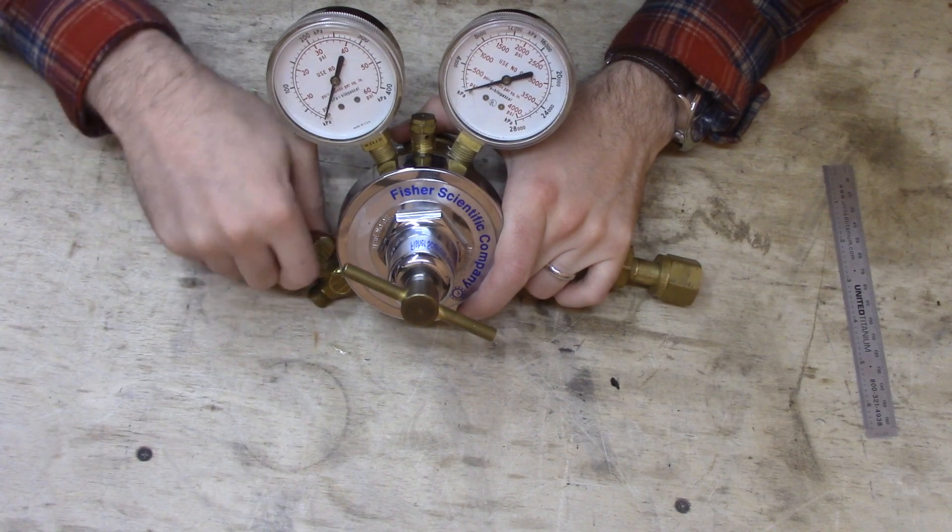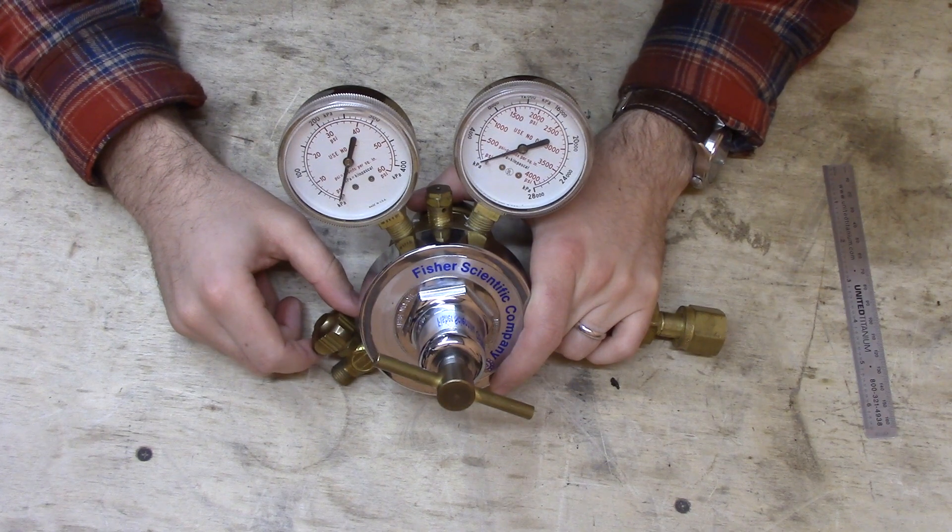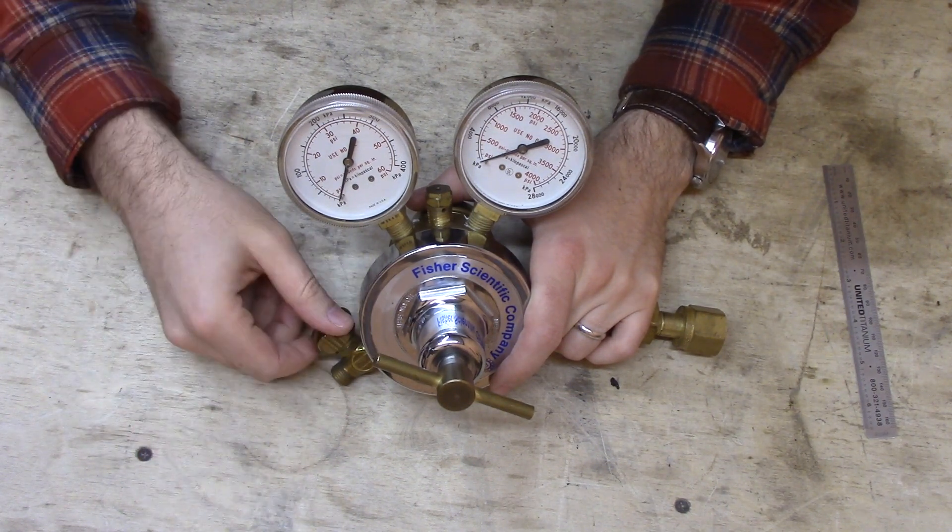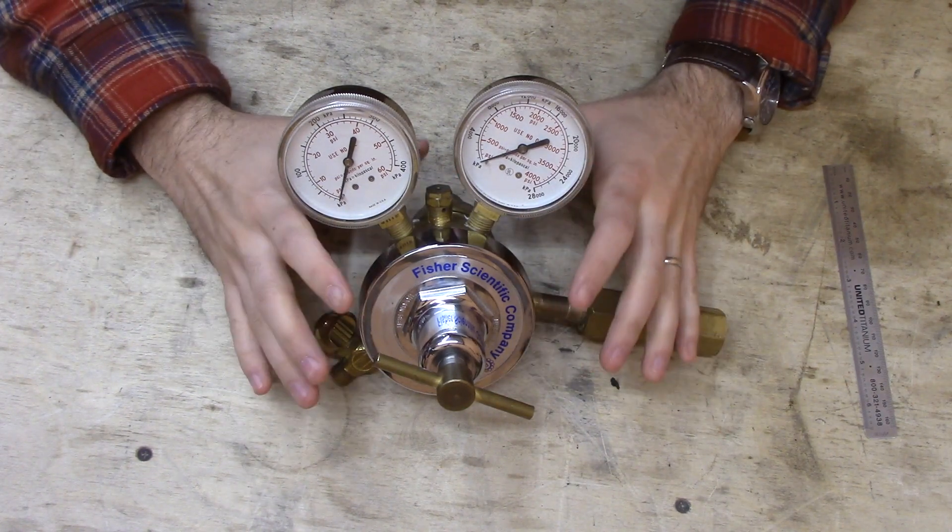And then there's also a valve on the output that you can adjust the flow rate. So if you had this connected to maybe oxygen bubbling up through some kind of aquarium or something like that, I don't know what you'd use this for, but you can adjust the flow rate with this.